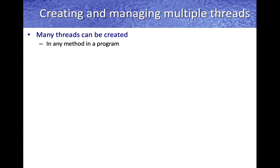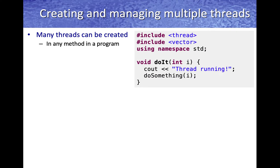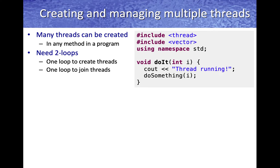Many threads can be created in a program. A thread is just like any other object, so you can use thread objects in containers like vectors. The general pattern is we need two loops: the first loop will spin up all of the threads, then a separate loop will wait for the threads to join — that means it will wait for each thread to finish its operations and for the do_it method to return.